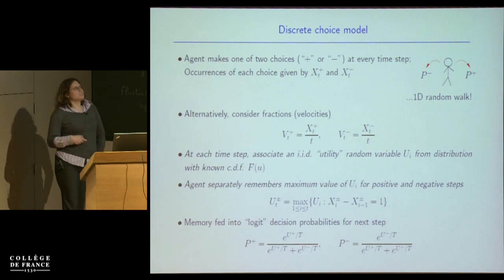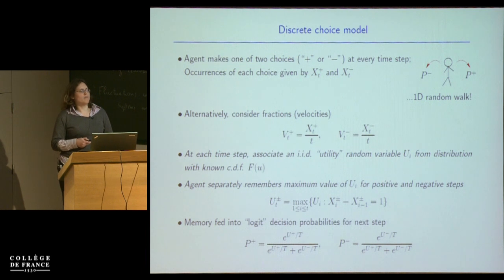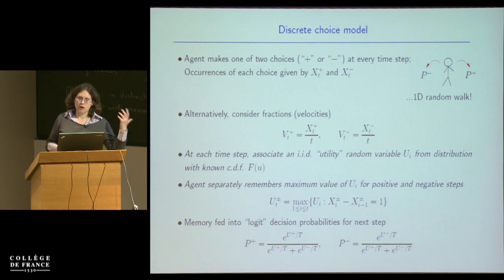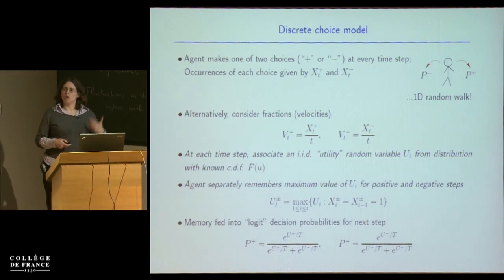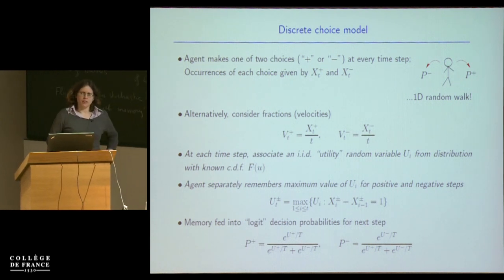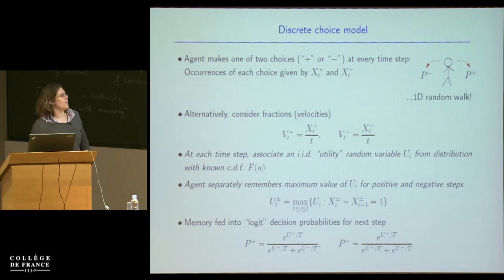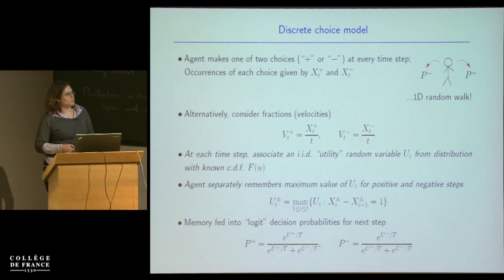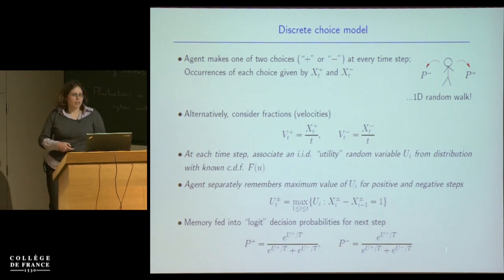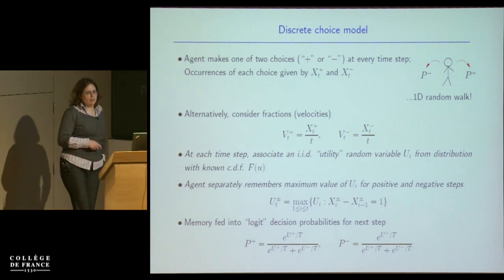The crucial point is that the agent separately remembers the maximum value of the U's for all the times he ever stepped right, called U plus, and the maximum value for all the times he ever stepped left, called U minus. That's a formal way of writing peak memory. That memory — the memory of the peak experience in each direction — is fed into the future probabilities for going right or left, using a Logit decision model, which is reminiscent of Boltzmann factors in physics.